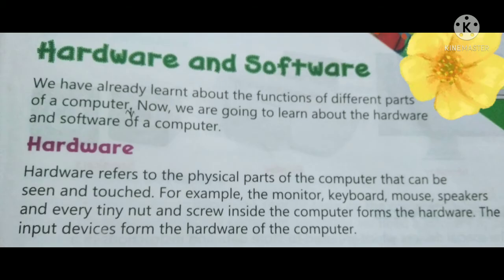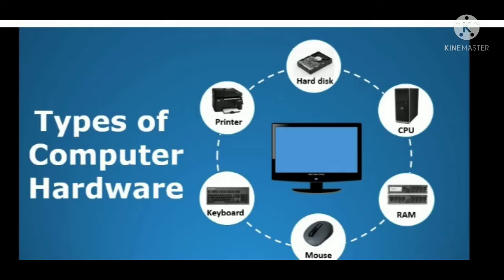Now we can look at the textbook. Open it. What is the first chapter? Hardware and Software. In this chapter, we are going to learn about hardware and software of a computer. First, what is hardware? Hardware refers to the physical parts of the computer that can be seen and touched.